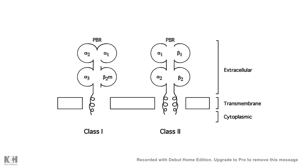In the case of class 2 MHC, it has two separate chains: one chain has the alpha 1 and alpha 2 domains, and the other chain has the beta 1 and beta 2 domains.